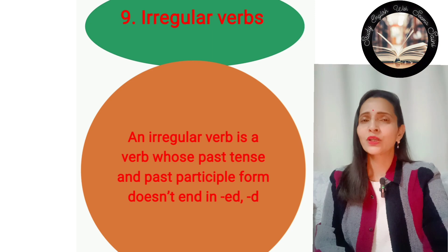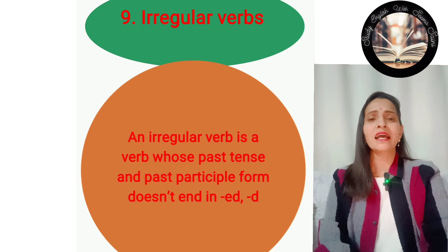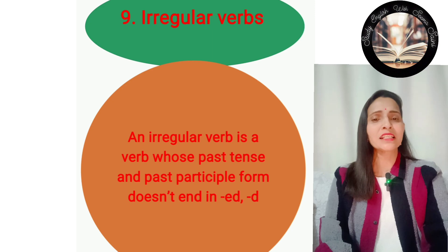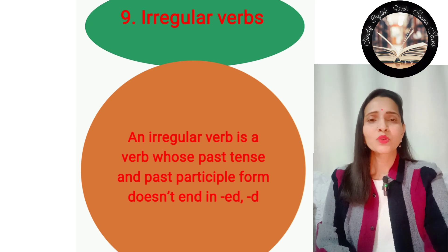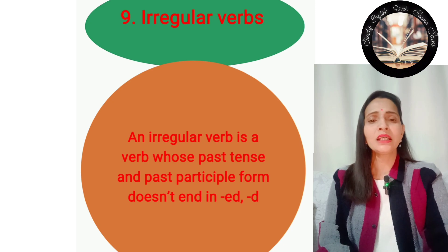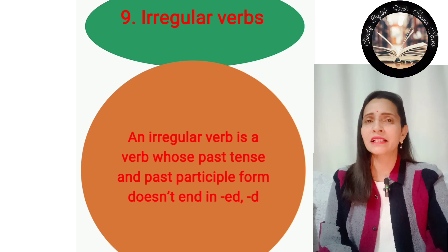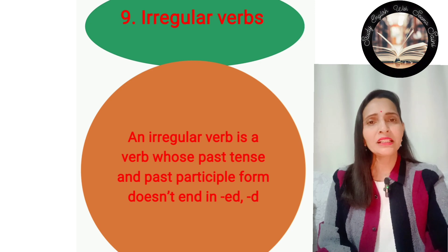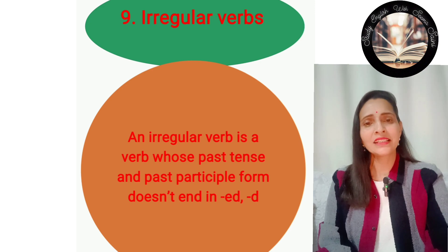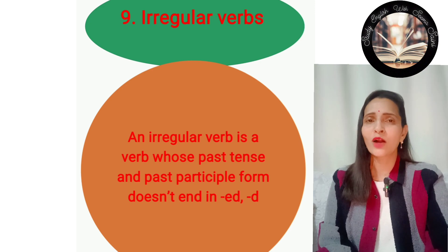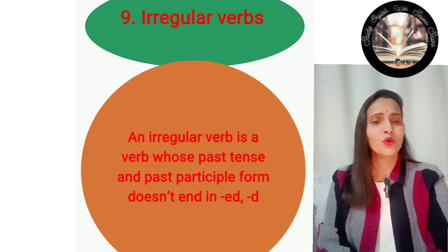Irregular verbs: an irregular verb is a verb whose past tense and past participle form does not end in '-ed'. So irregular verbs do not end in '-ed' when forming their past tense or past participle, unlike regular verbs.